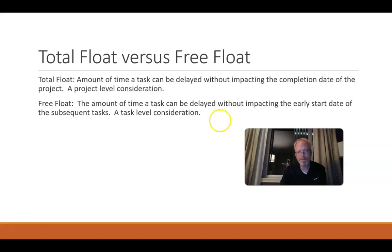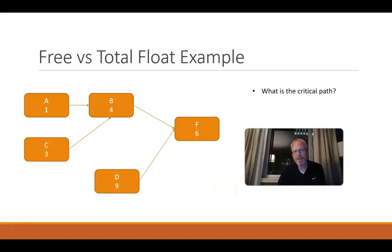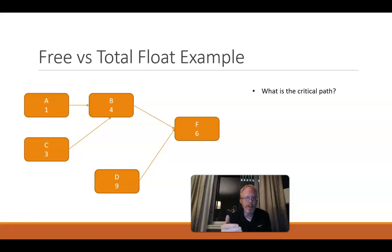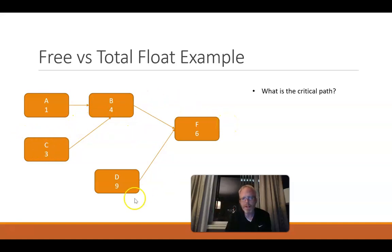It's easiest to look at this through an example. Take a look at this project we have here. First, we want to compute the critical path. F is going to be on the critical path because there's nothing parallel to it — that's our end activity. The preceding activities on F: the longest one is the DF lane at a total of 15 days, where ABF is 11 days and CBF is 13 days. So the critical path is the DF path.